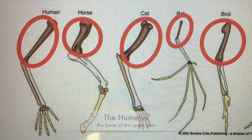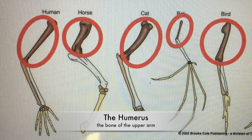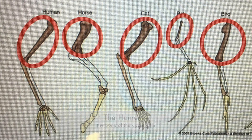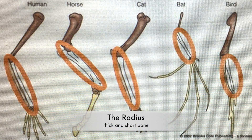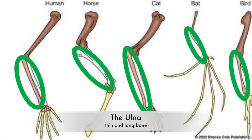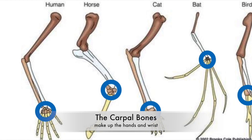The pentadactyl limb is a common four-limb structure found in animals that descended from the same ancestor, known as tetrapods. It consists of the humerus, the bone in the upper arm or forelimb. The humerus joins at the shoulder and elbow area. The radius is within the forearm area and is thicker and shorter than the ulna, which is thinner and longer and runs parallel to the radius. The ulna attaches itself to the opposite side of the thumb. The carpal bones are within the hand and wrist structure and joined to the metacarpals and phalange bones.